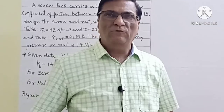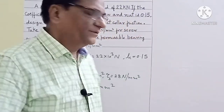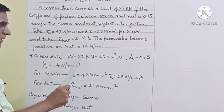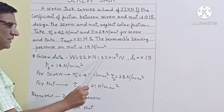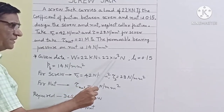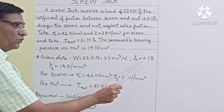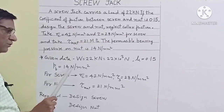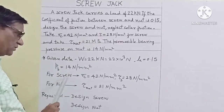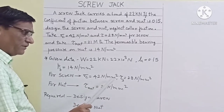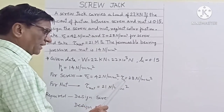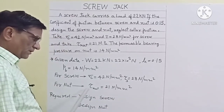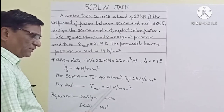Now first of all, we write down the given data. Load W is equal to 22 kN, that is 22 × 10³ N. μ is equal to 0.15. Bearing pressure Pb is equal to 14 N/mm². For screw, σC is equal to 42 N/mm² and τs is equal to 28 N/mm². For nut, τ is equal to 21 N/mm².